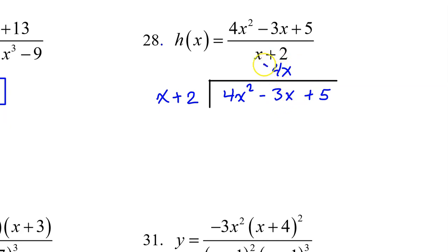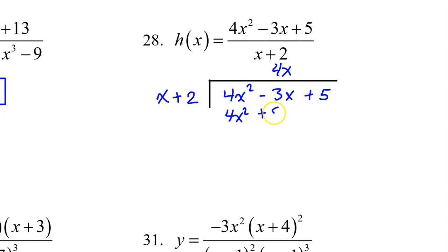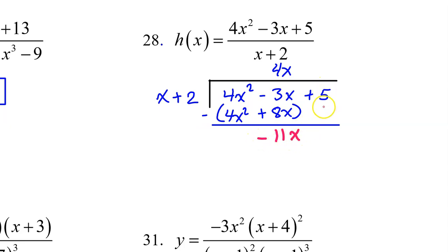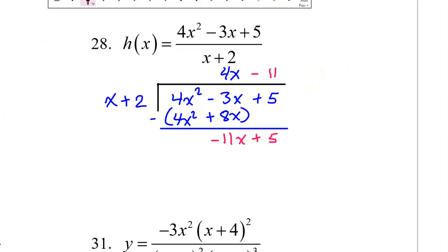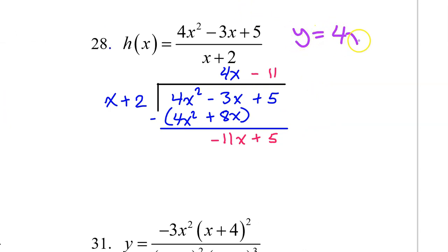Take the term you just found and multiply by the binomial. 4x times x is 4x squared — these should always match. 4x times 2 is 8x. Then you subtract. These cancel out. Negative 3x minus 8x is negative 11x. Bring down the plus 5. Now divide the leading terms again: negative 11x divided by x is negative 11. At this point we already know the answer — the slant asymptote is going to be y equals 4x minus 11.